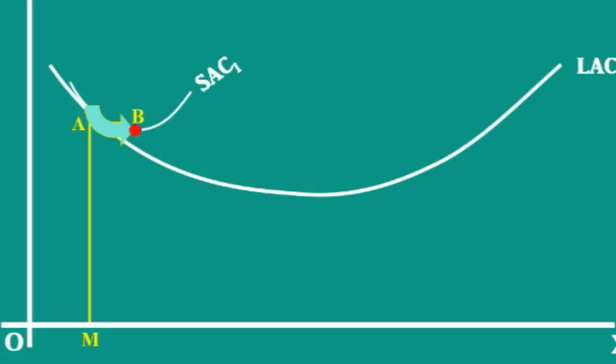It means moving away from the long run average cost curve. You must know A is not the minimum point of SAC1. It is on the falling side of SAC1.